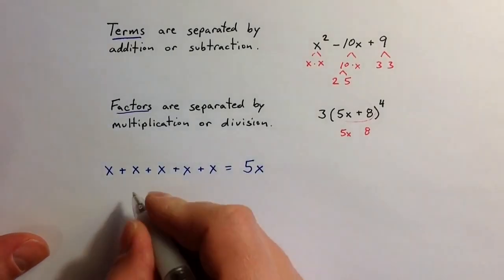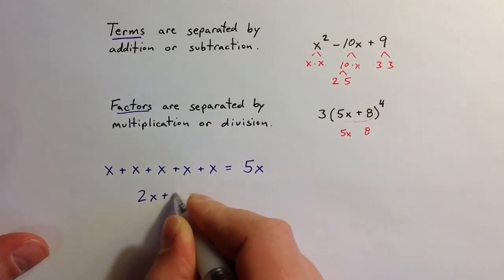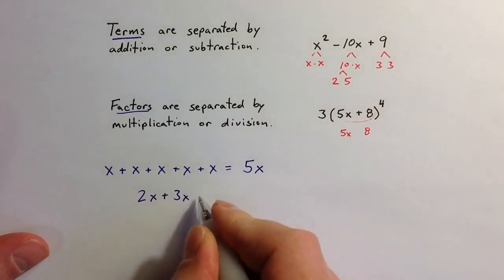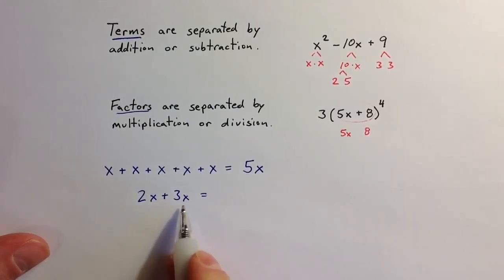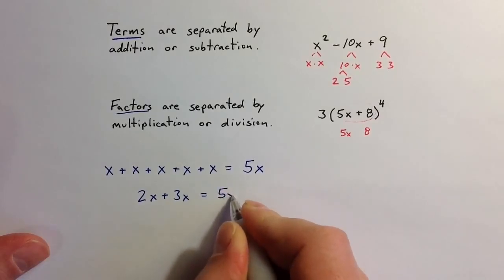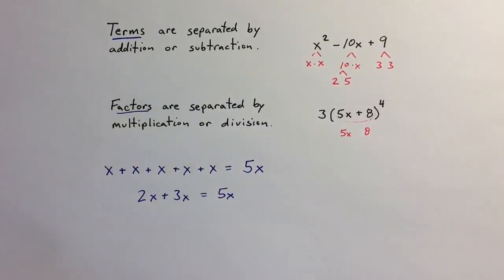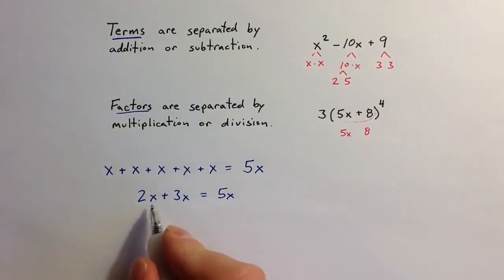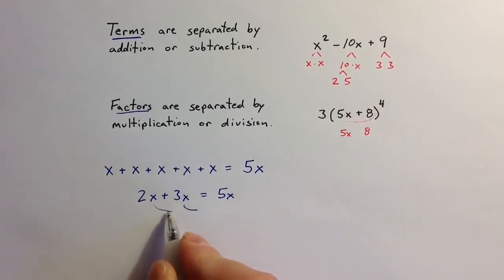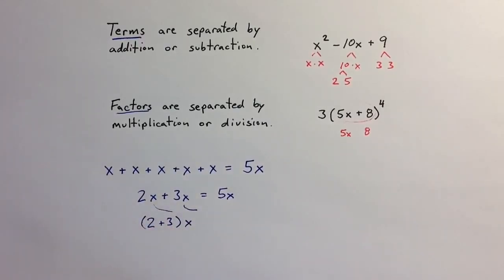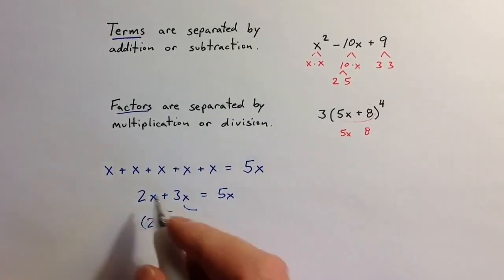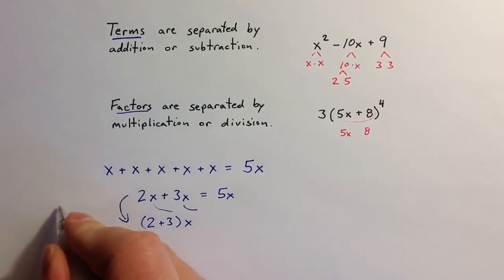If I had 2x plus 3x, those two terms can be combined. They're called like terms, because 2x represents x plus x, and 3x represents x plus x plus x, so together they represent 5x. We can factor the x out from those two parts of the expression and think of this as (2 plus 3) times x.